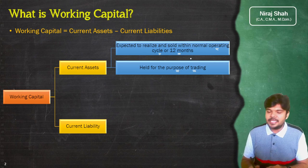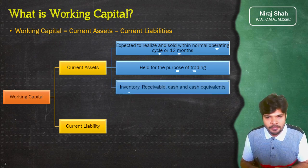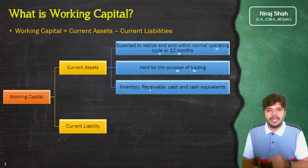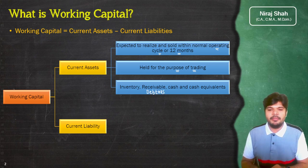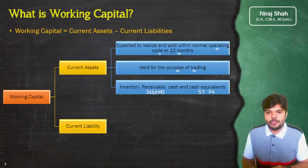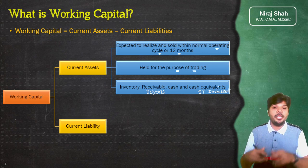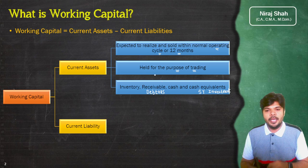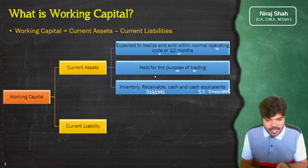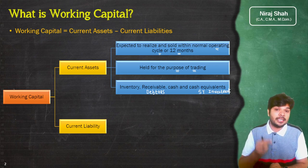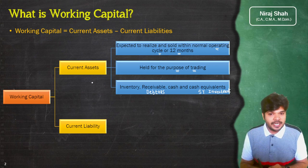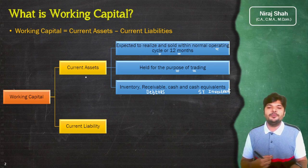Current assets के examples में inventory हो सकता है, receivables यानि आपके debtors हो सकते हैं, cash balance है, cash equivalents हैं यानि short term या liquid investments। ये सब चीजें आपने balance sheet में इसलिए hold करके रखी होती हैं क्योंकि आप इनका या तो trading करना चाहते हो या इनको short term में cash में convert करना चाहते हो। यह definition होगी current assets की।